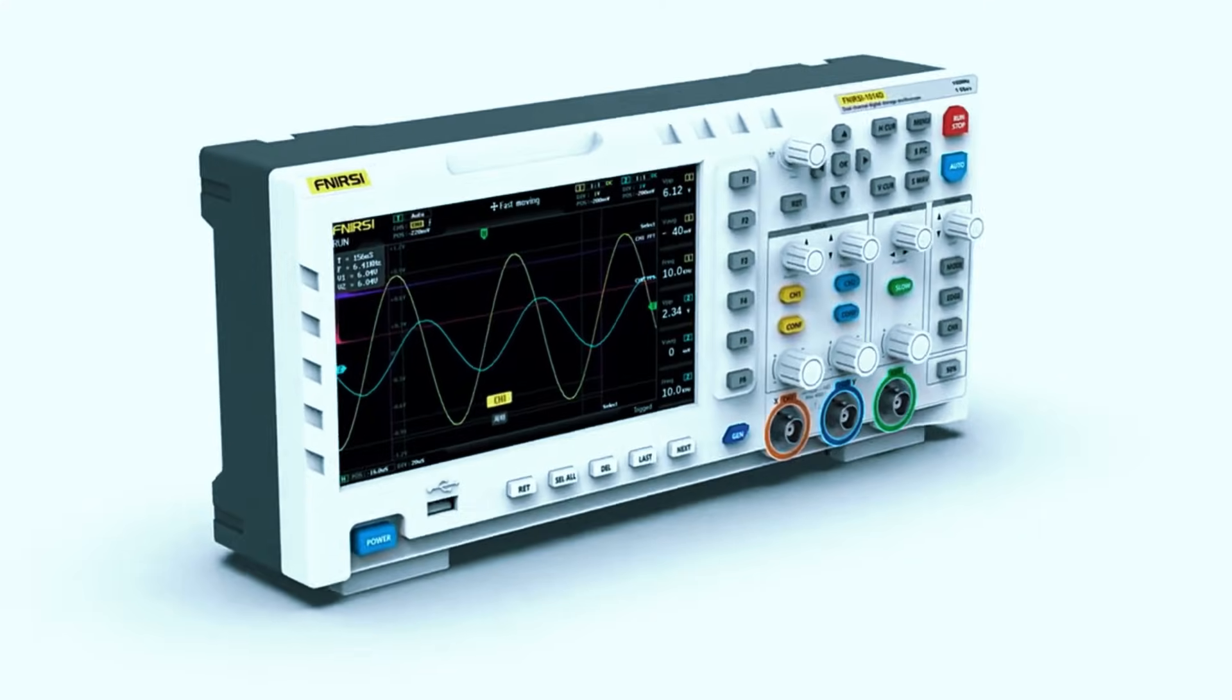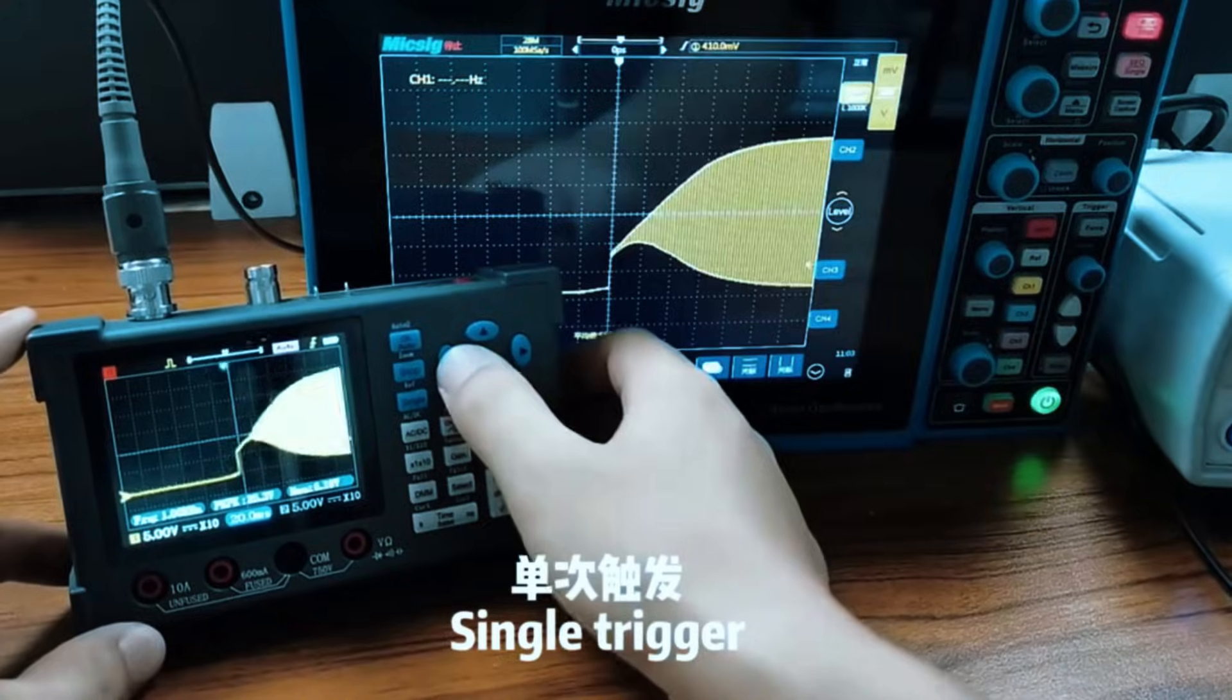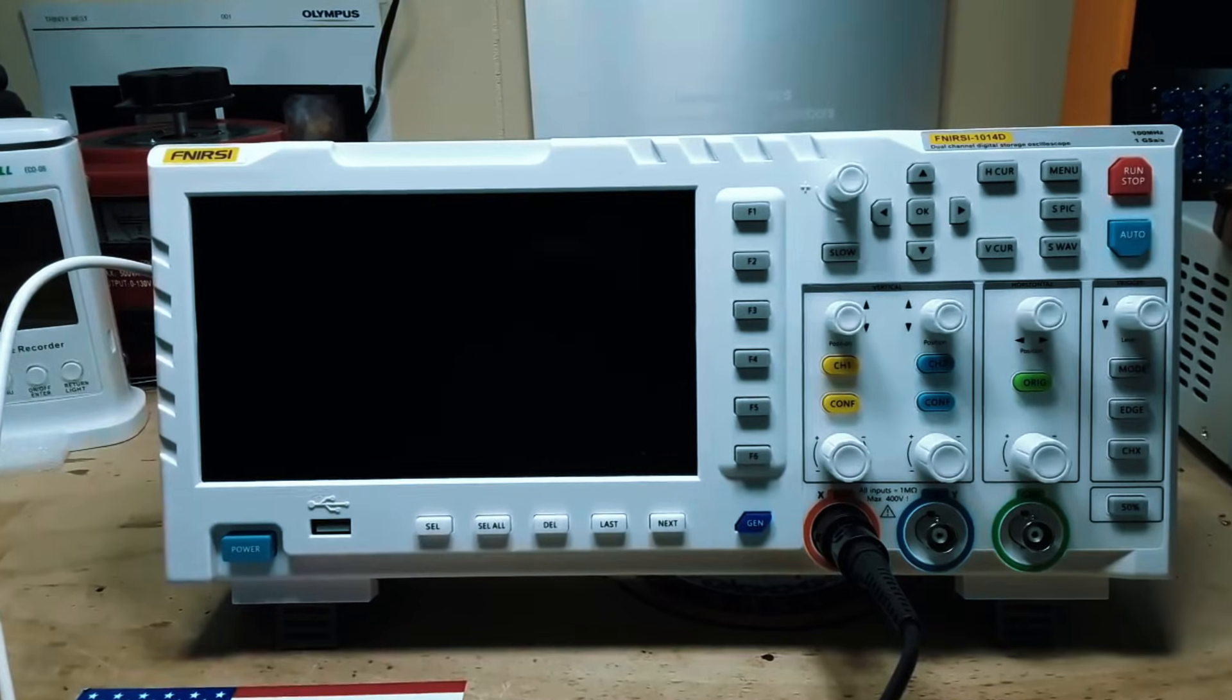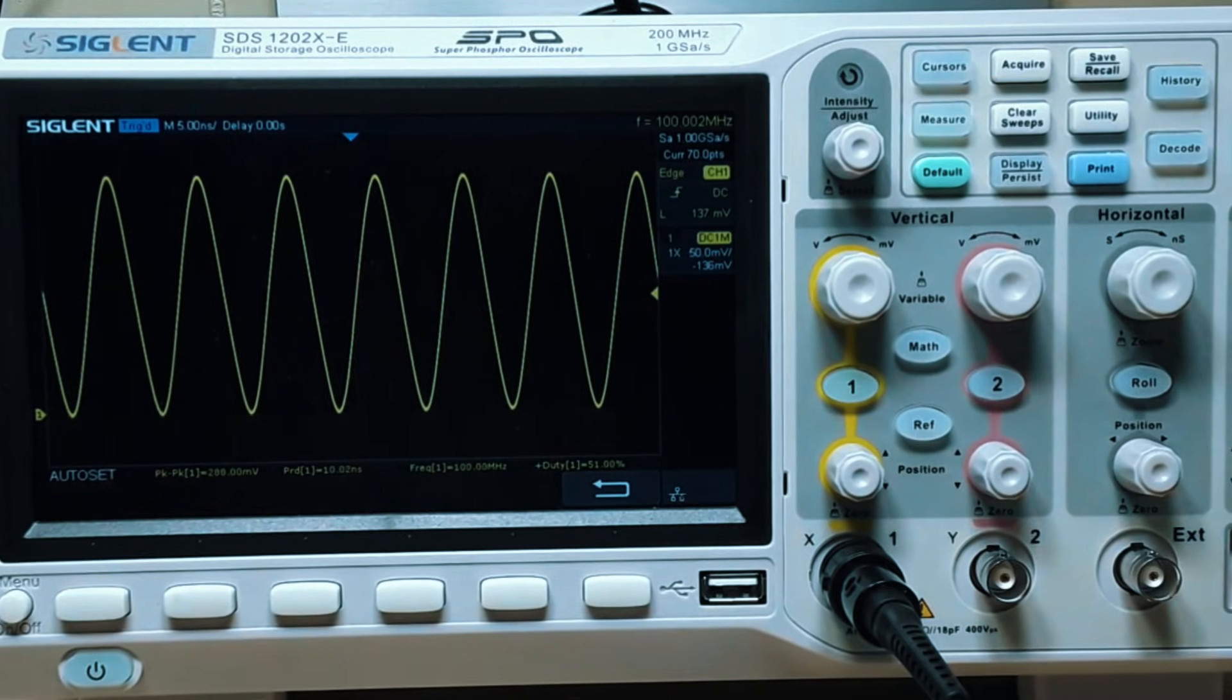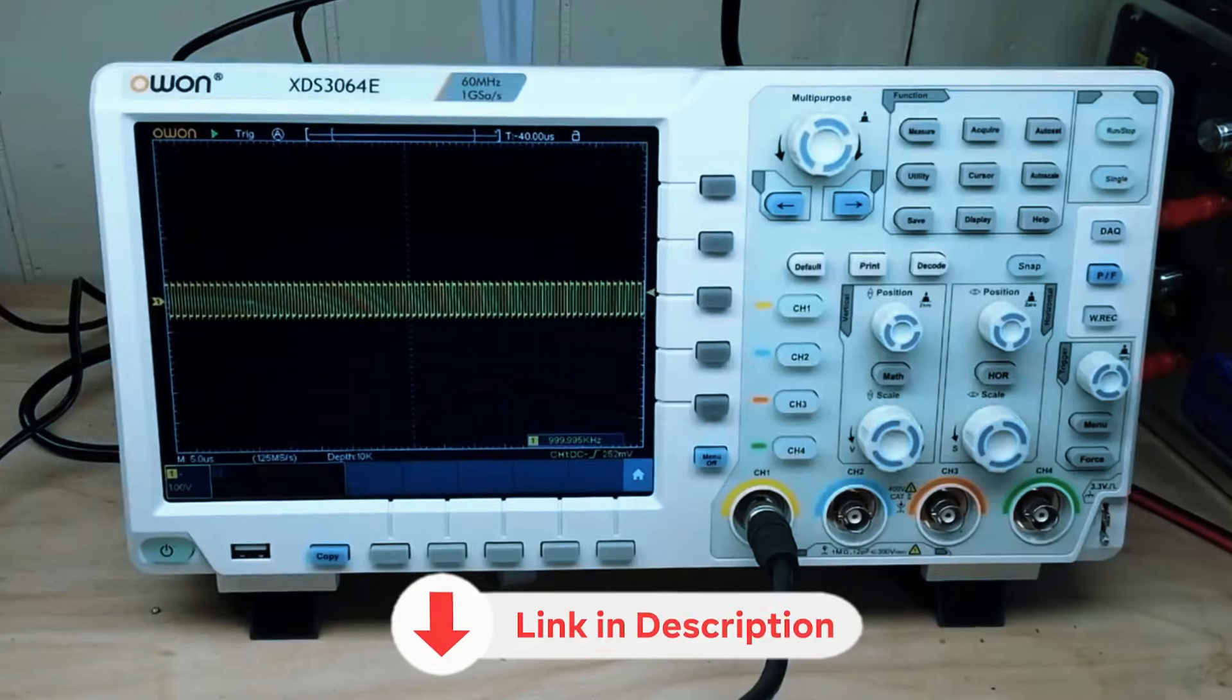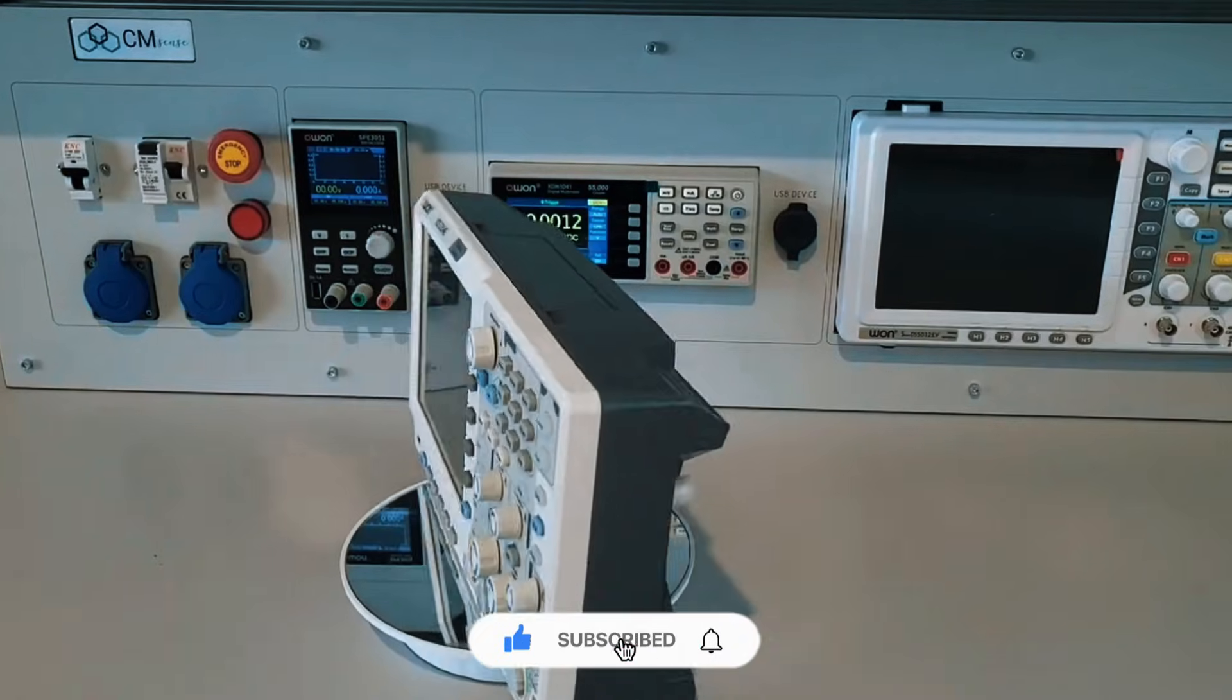And that's a wrap, guys. These are the top 5 best digital oscilloscopes of 2025, each one offering something unique based on budget, features, and performance needs. Now, which one is your pick? Are you going for the budget-friendly FNI-RSI-1014D or the all-out Pro Beast Siglent SDS-1202XE? Drop a comment below and let us know. And hey, don't forget to check the links in the description to grab the latest discounts. If this video helped, hit that like button, subscribe, and we'll see you in the next one. Stay curious and keep experimenting.